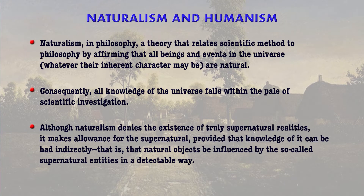Although naturalism denies the existence of a truly supernatural reality — any form of God as we typically think of it — nature itself can be considered supernatural. Naturalism makes allowance for the supernatural, provided that knowledge of it can be had indirectly, meaning that natural objects are influenced by so-called supernatural entities in a detectable way. So in naturalism, even supernatural entities can potentially be detected.